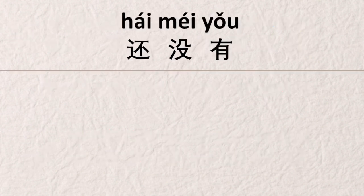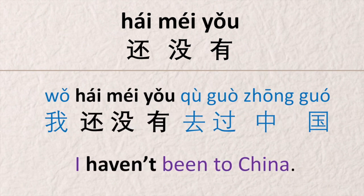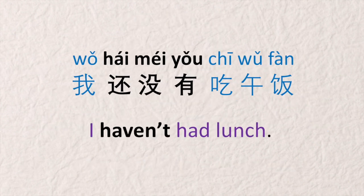If we say 还没有, it means 'haven't' or 'hasn't'. It's for the present perfect tense. For example, 我还没有去过中国 — I haven't been to China. 我还没有吃午饭 — I haven't had lunch.